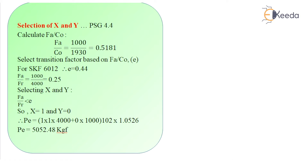For selecting X and Y, we first need to calculate the ratio of FA and C0. FA by C0 equals 1000 divided by 1930, giving 0.5181. For SKF6012, we find the transition factor E, which equals 0.44. Then we calculate the ratio of FA and FR as 1000 divided by 4000, which equals 0.25.